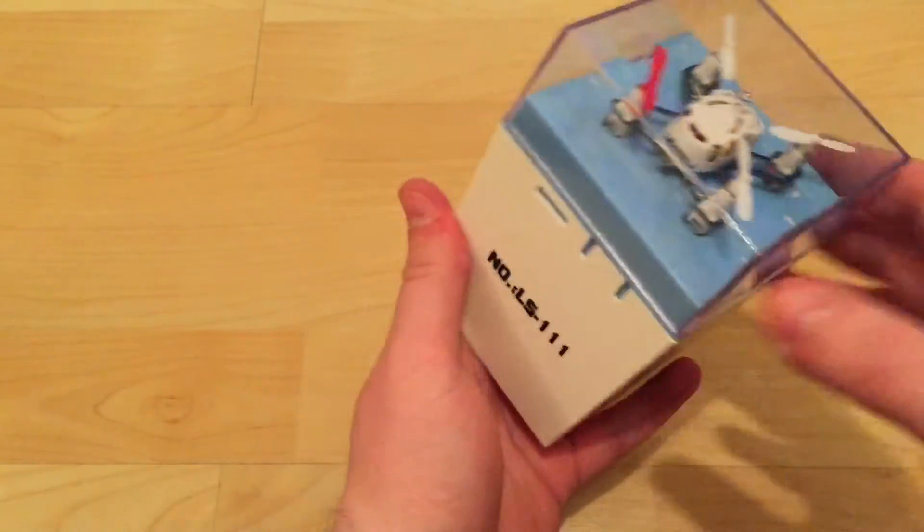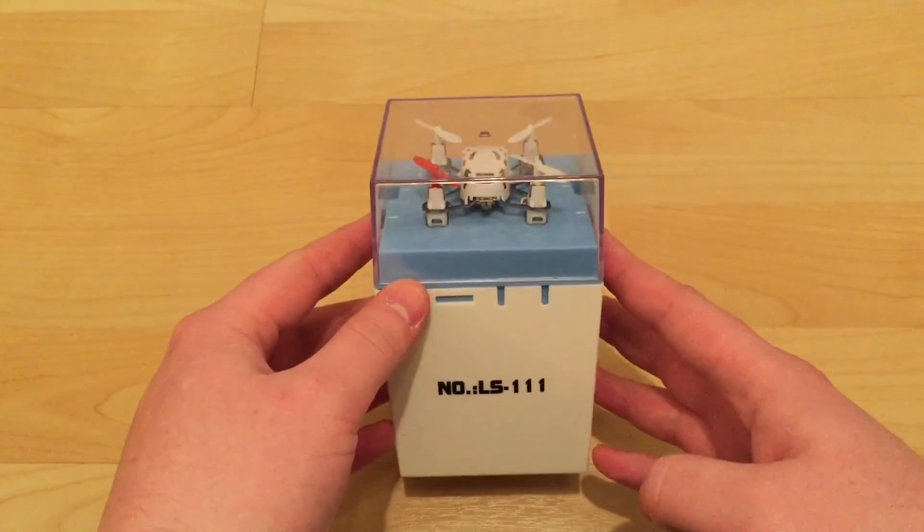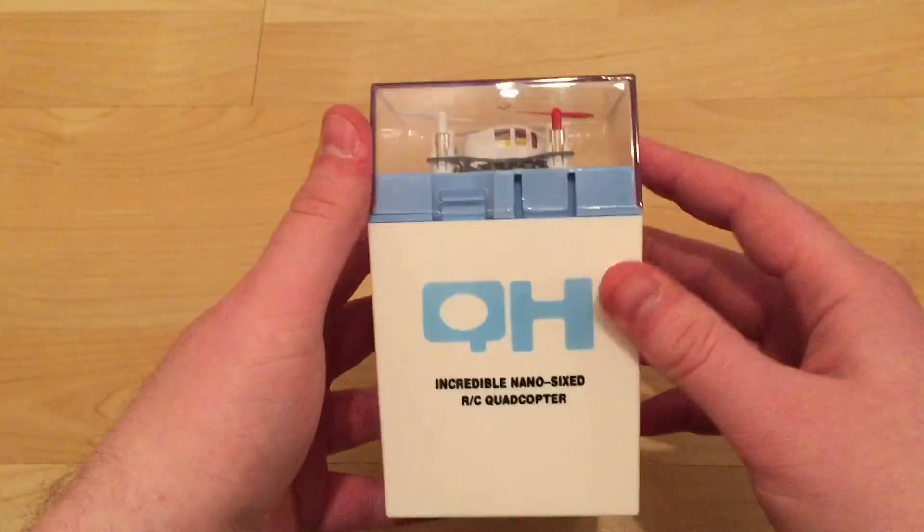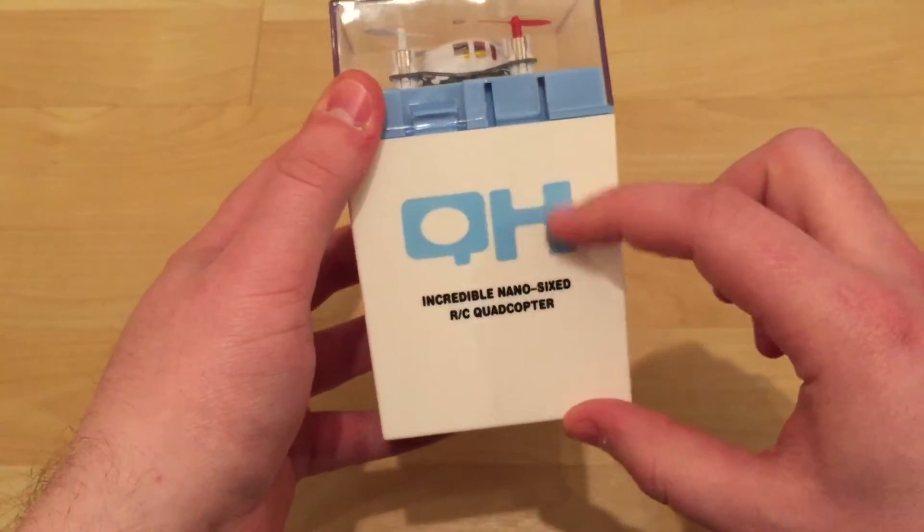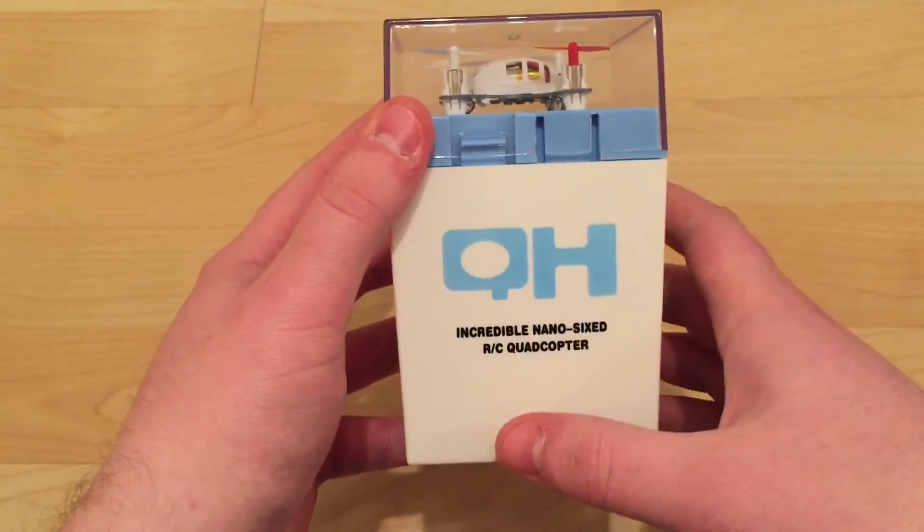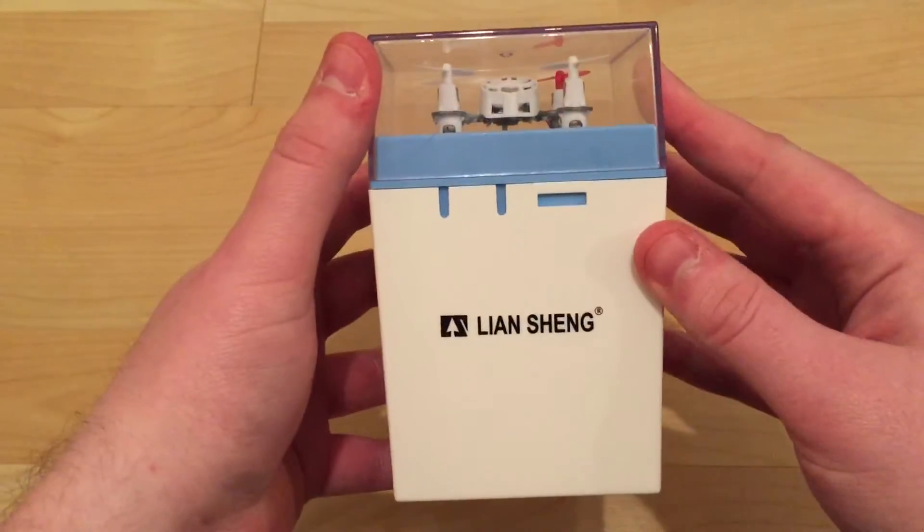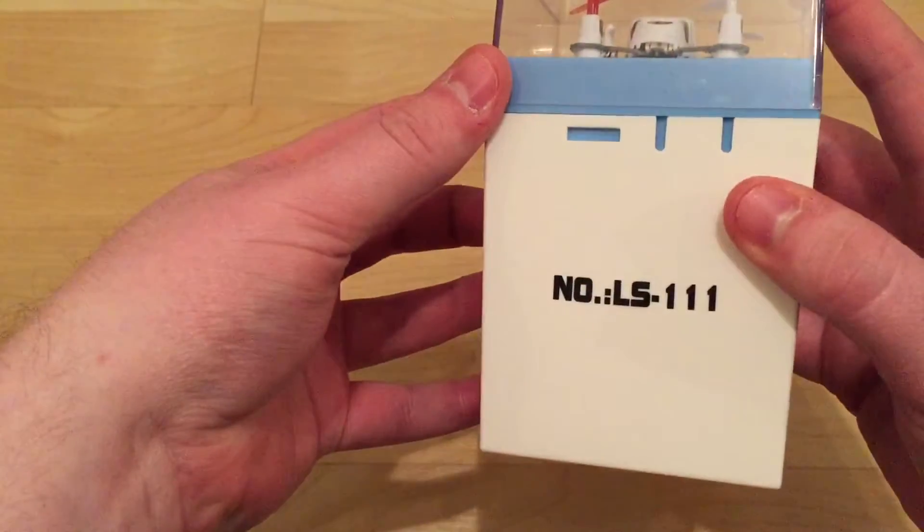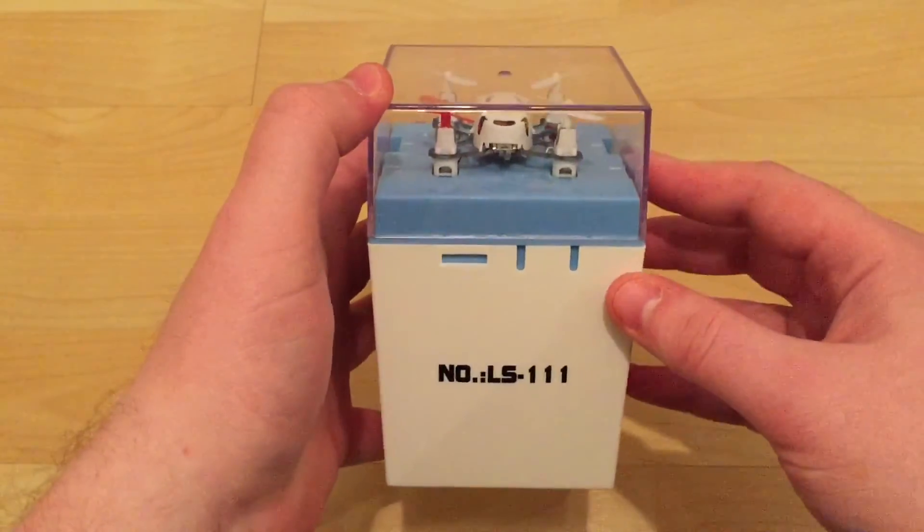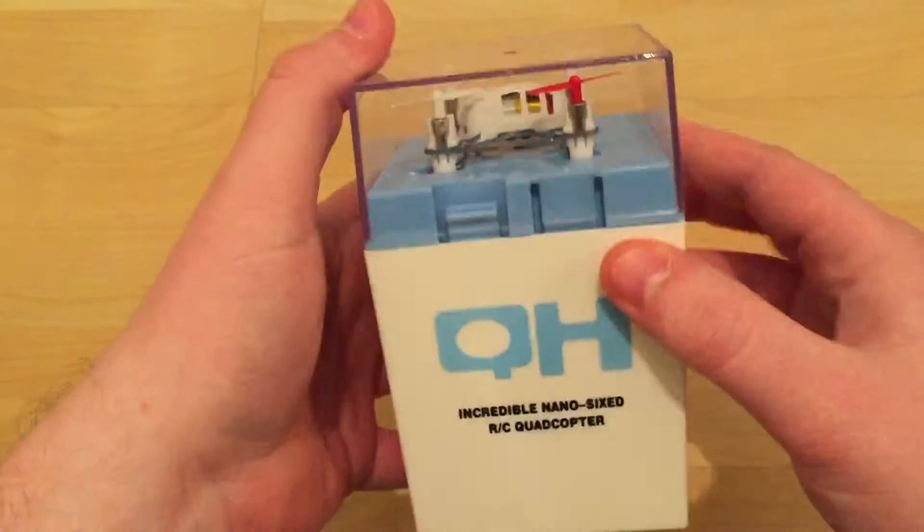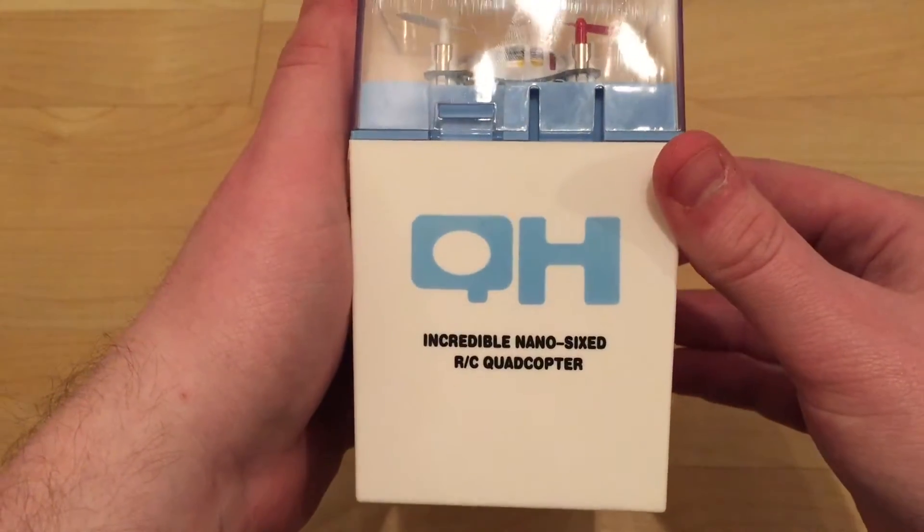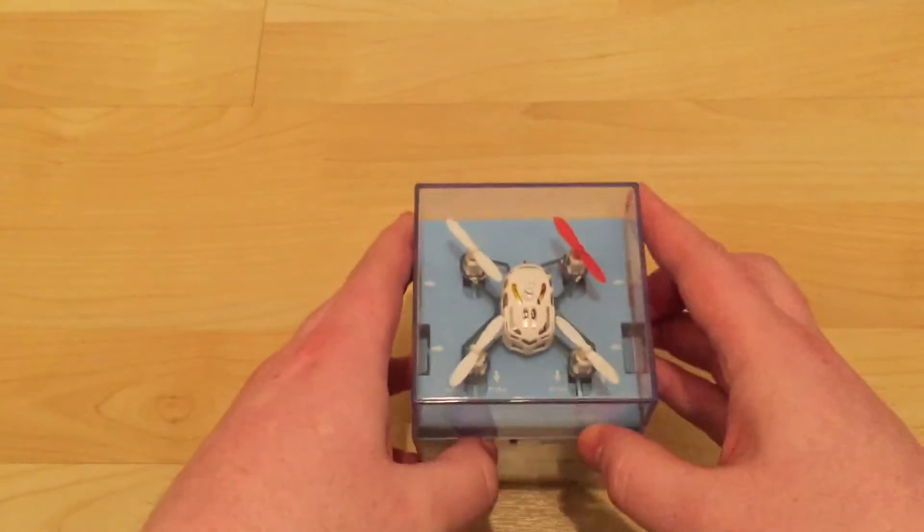Inside we have this rather neat little plastic container. You can see it's clearly supposed to say Q4, they've just changed it enough so that you can call it a Liansheng LS111, but it's basically a copy of the Hubsan Q4 and it is an incredible nano 6th RC quadcopter, whatever that means. Okay let's have a look inside.